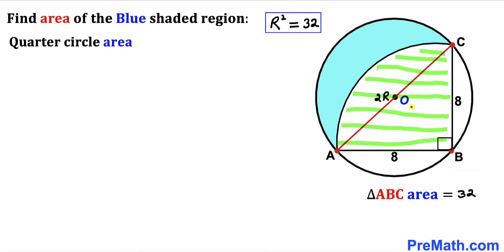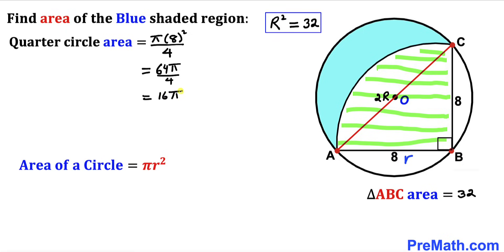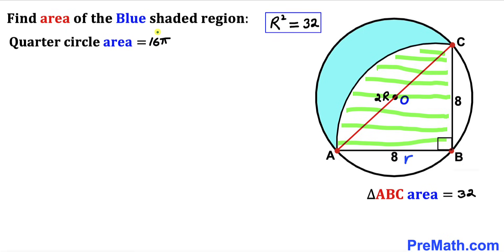Now let's calculate the area of the quarter circle. The area of a full circle is π r², where r is the radius of the quarter circle, which is 8. So the quarter circle area is π times 8² divided by 4, giving us 64π divided by 4, which equals 16π square units.